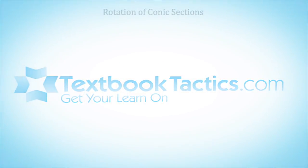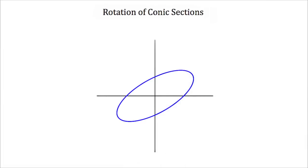This is a tutorial on the rotation of conic sections. When we talk about the rotation of conic sections, we're talking about ellipses, parabolas, hyperbolas, or circles that have been rotated off their standard axes. Here we have the example of an ellipse, and it's been rotated off the standard x and y axis, so its axes of symmetry are no longer parallel to the x and y axes.